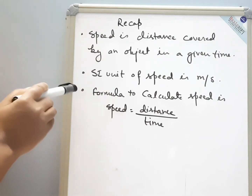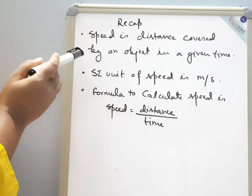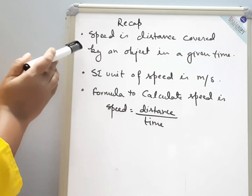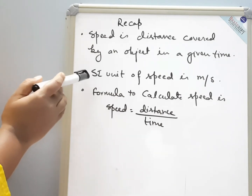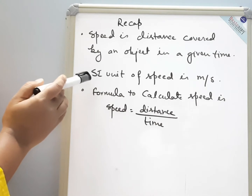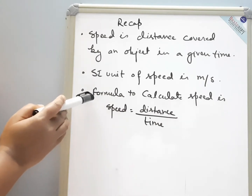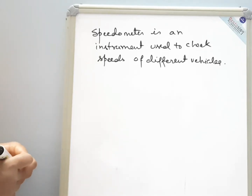But before we go into detail about that, we will recap what we have done in our previous lesson. We learned that speed is distance covered by an object in a given time. The SI unit of speed is meter per second. The formula to calculate speed is: speed is equal to distance divided by time. A speedometer is an instrument used to check the speeds of different vehicles.